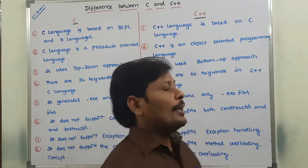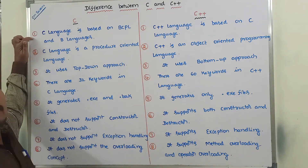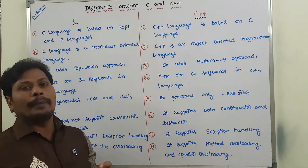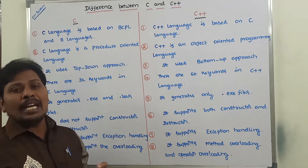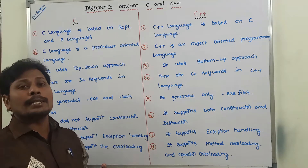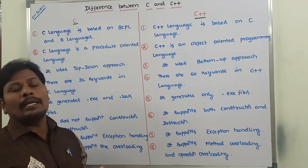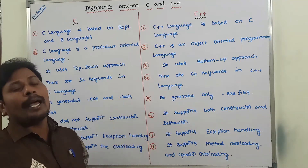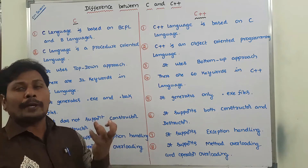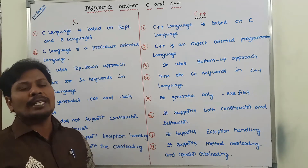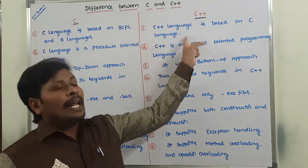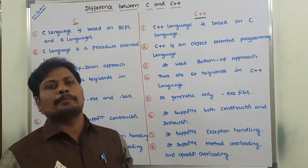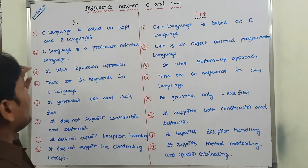The first difference is: C language is based on BCPL and B language. That means C language comes from two languages — first one is BCPL, that means Basic Combined Programming Language, and another one is B language. From those two languages, C language was developed. Whereas C++ language comes from the C language only.